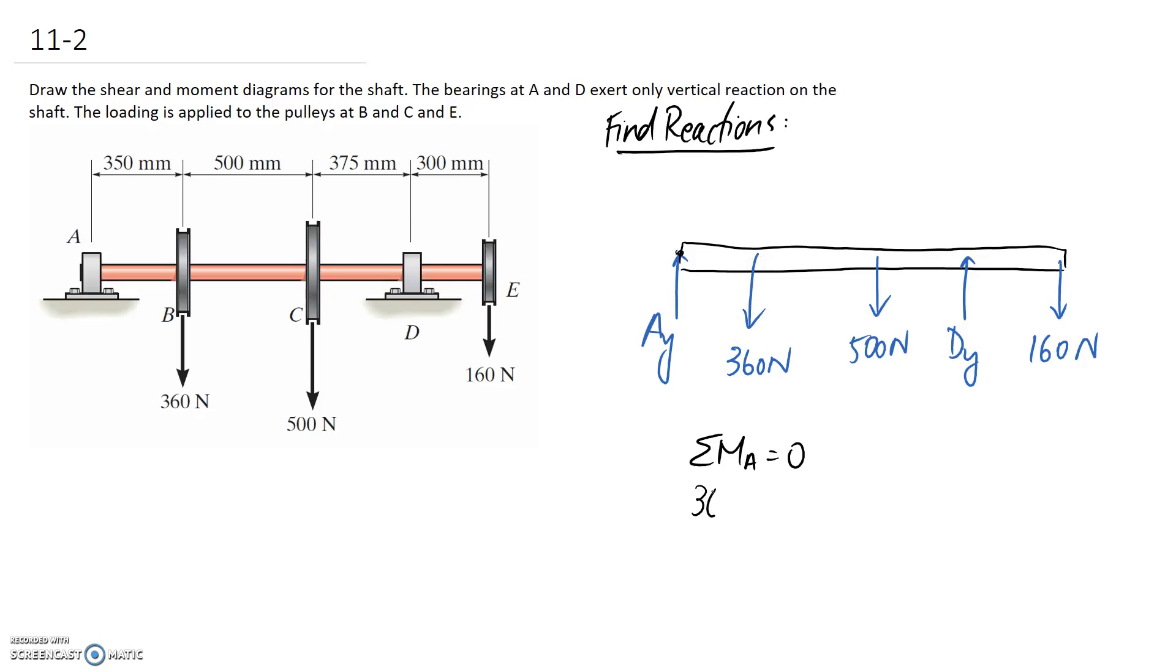We've got the 360 Newton force acting at a distance of 350 millimeters or 0.35 meters, and this is going to try and create a clockwise moment so it's negative. Then we've got the 500 Newton force acting at the full distance of 850 millimeters or 0.85 meters. Again it's trying to create a clockwise moment so it's negative.